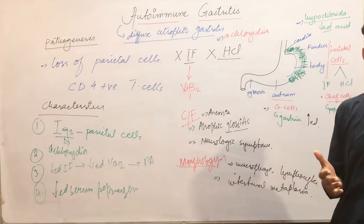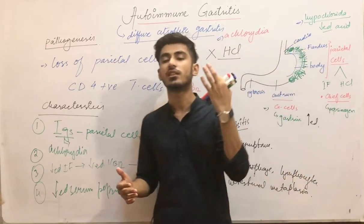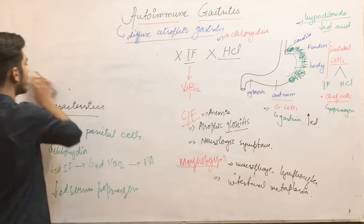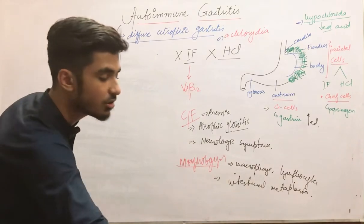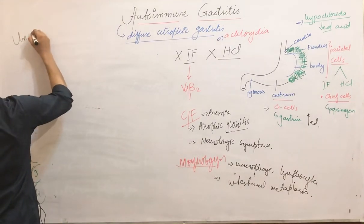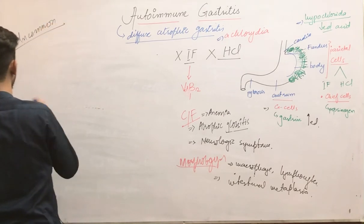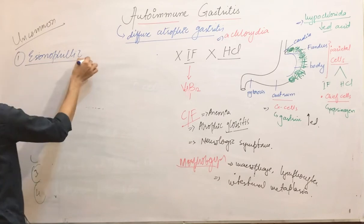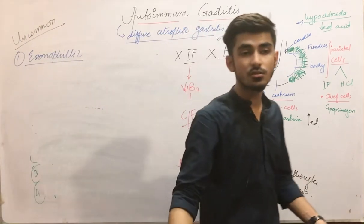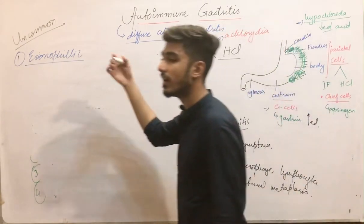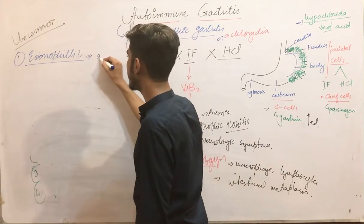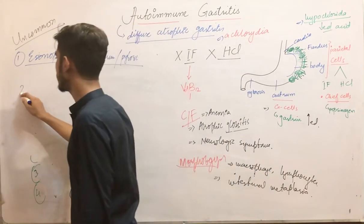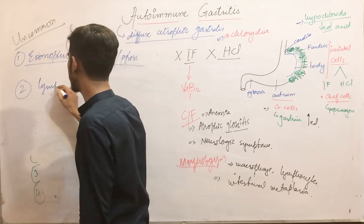Now we will briefly cover three uncommon forms of gastritis. The first is eosinophilic gastritis — the name indicates increased eosinophils. This occurs due to an allergic reaction to any substance and affects the antrum and pyloric region of the stomach.